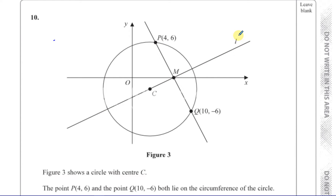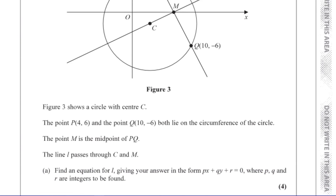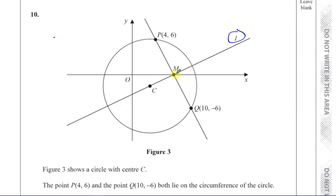We need to find the equation of this line. We know it passes through the centre of the circle — do we know the centre? No. We know it passes through M — do we know the coordinates of M? No, but we can find it because we know it's the midpoint of PQ. We also need the gradient of line L, which we're not given, but we can determine it.